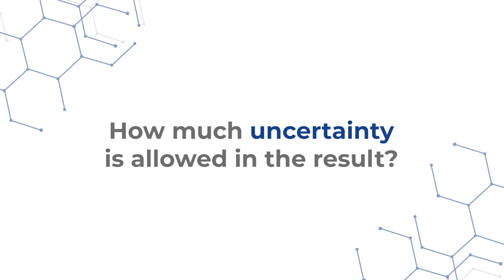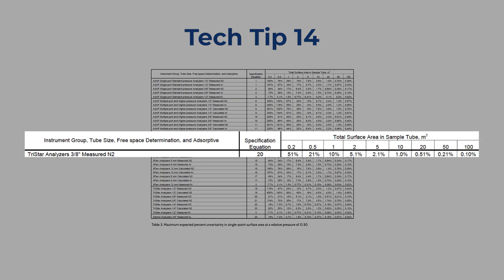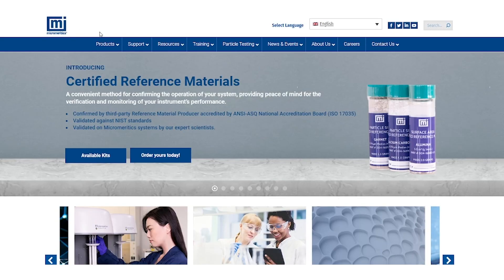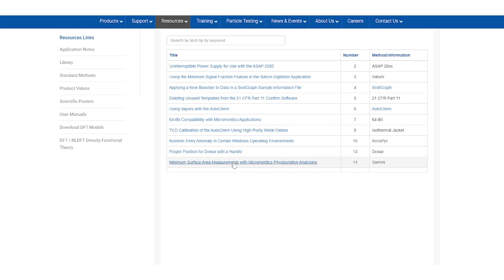Lastly, how much uncertainty is allowed in the result? This table found on TechTip 14 from Micromeritics shows the minimum surface area needed in square meters with the maximum percent uncertainty. For example, if the sample with one square meter total surface area was analyzed on the TriStar 3000 Plus with nitrogen on a three-eighths inch opening diameter tube with free space measured, then the maximum uncertainty of the data is 10 percent. For more details on uncertainty allowance, please visit the Micromeritics website and look over the TechTip 14.